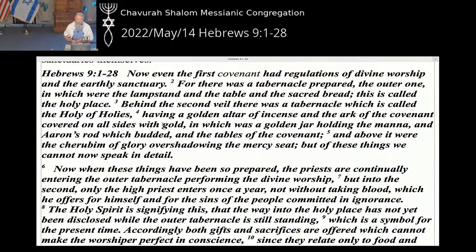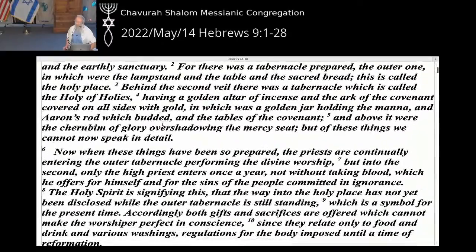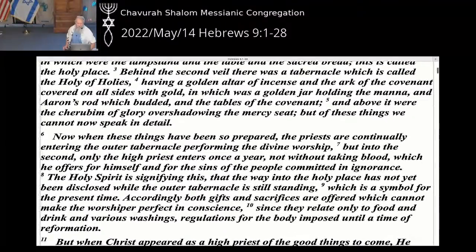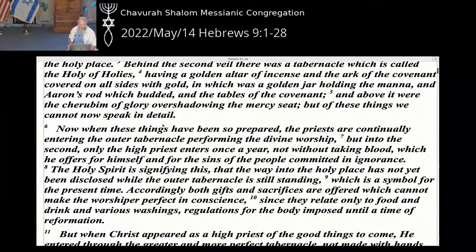Now even when the first had regulations for divine worship in the earthly sanctuary — for there was a tabernacle prepared, the first one (translated 'outer' here, but literally 'first' in Greek) — in which were the lampstand, the table, and the showbread, the sacred bread. This is called the holy place. Behind the second veil there was a tabernacle called the holy of holies, having a golden altar of incense and the ark of the covenant covered on all sides with gold, containing a golden jar holding the manna, Aaron's rod which budded, and the tablets of the covenant. Above it were the cherubim of glory overshadowing the mercy seat. But of these things we cannot now speak in detail.